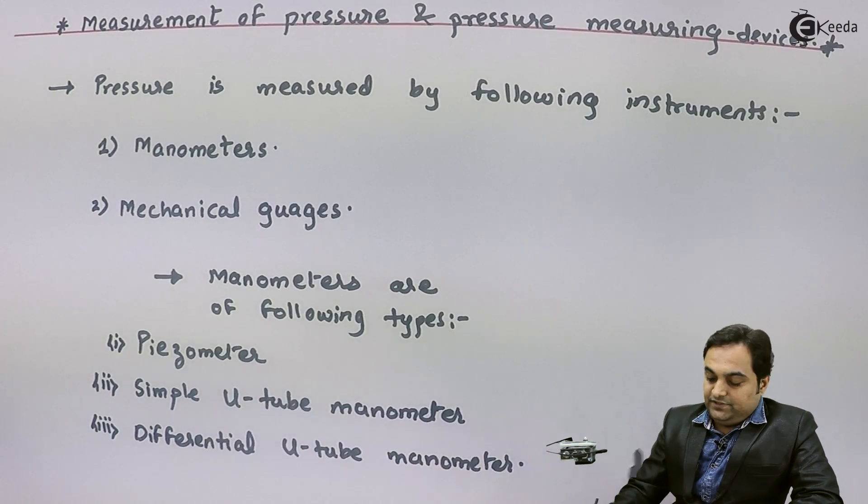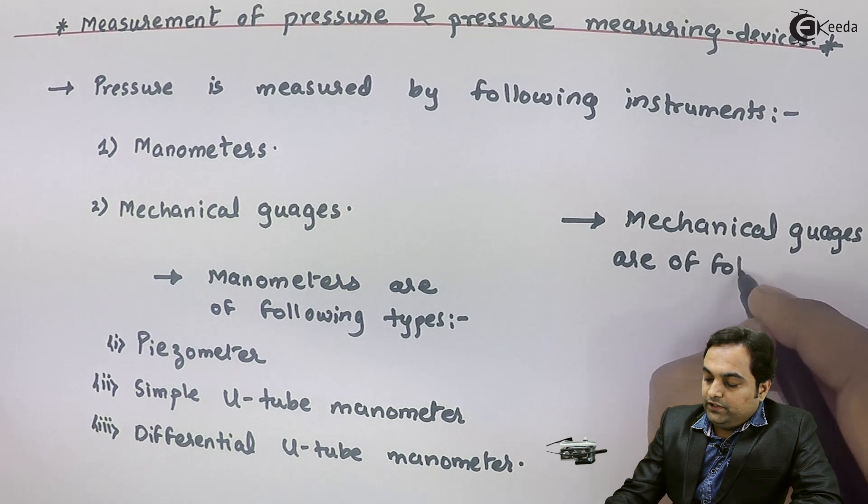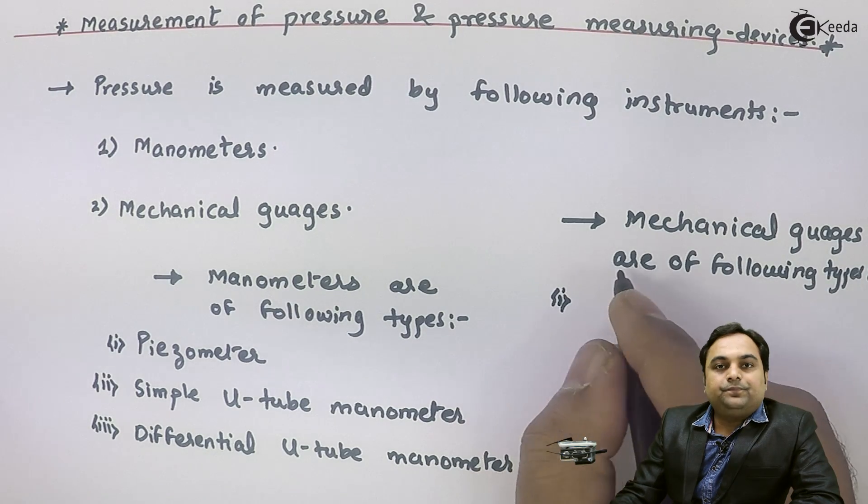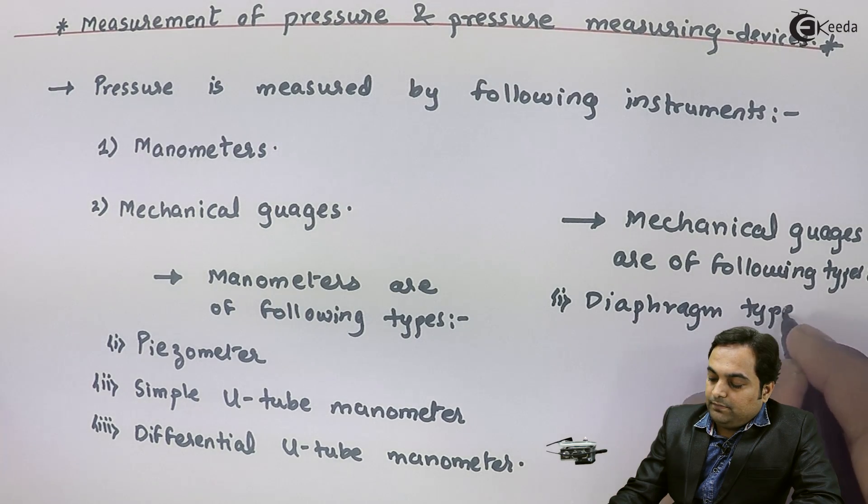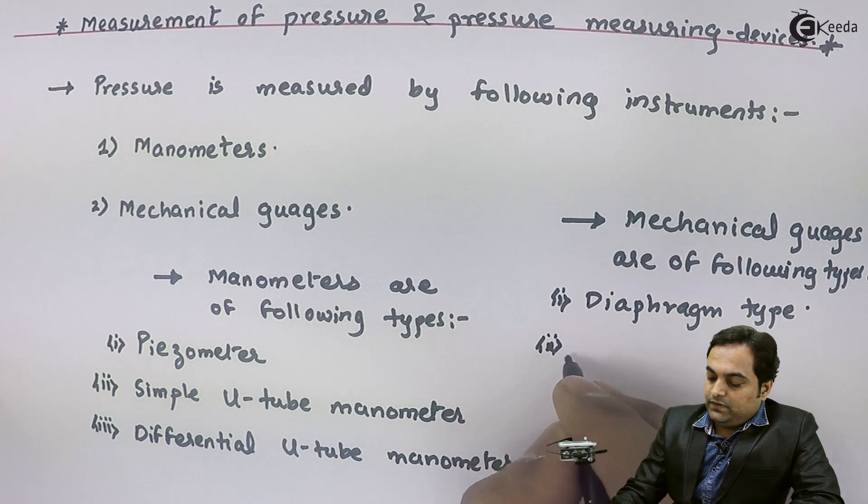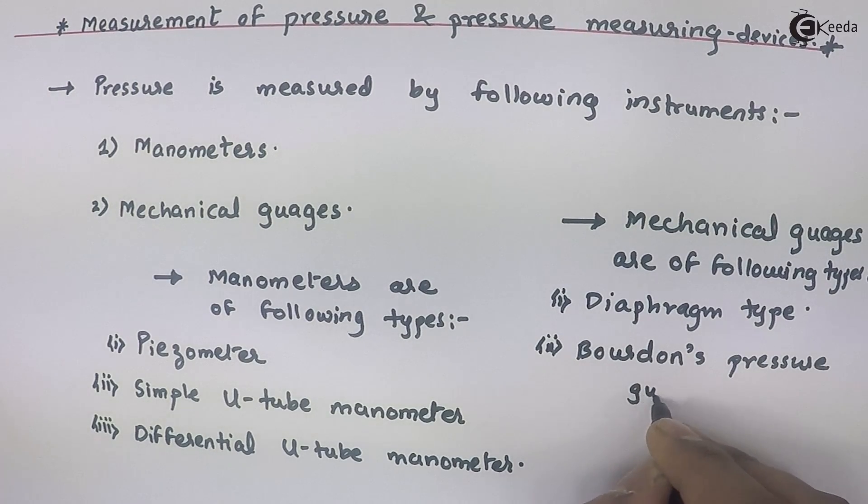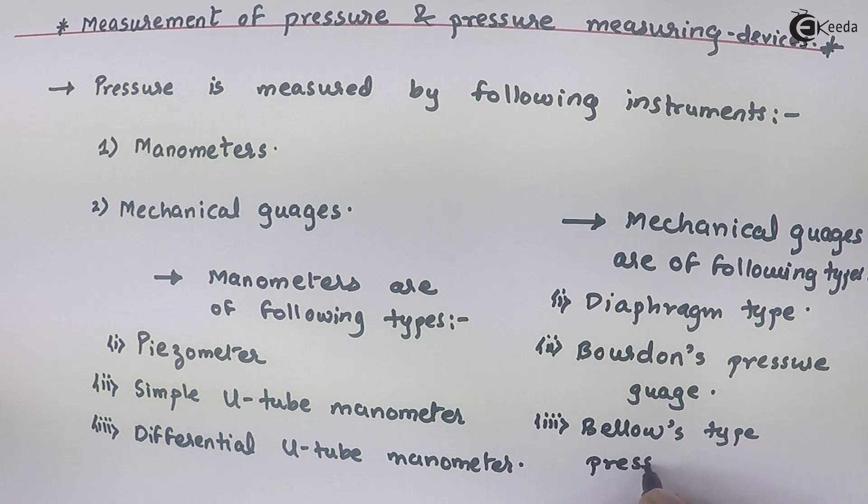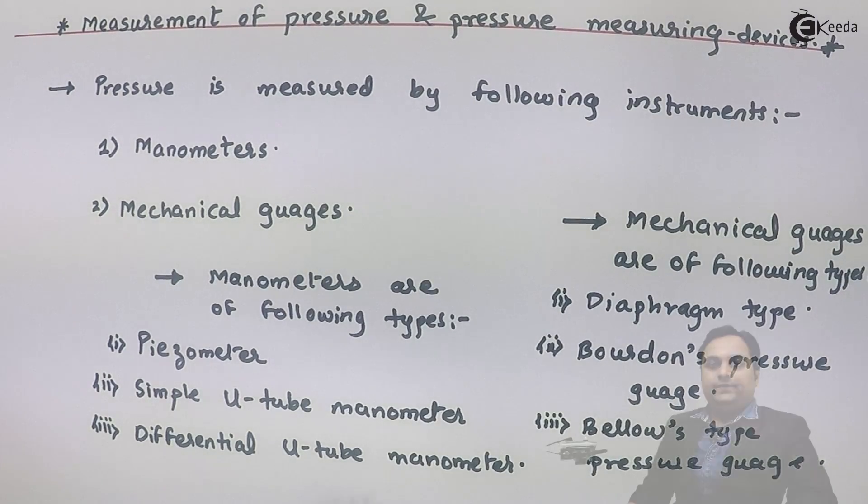Next, mechanical gauges are of following types. The first one is diaphragm type measuring instrument, next is Bourdon's pressure gauge, then we have bellows type pressure gauge.